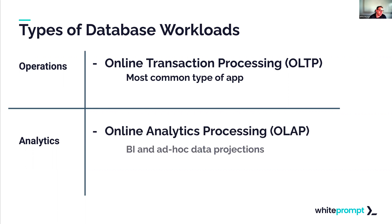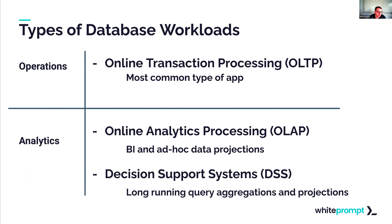For the analytics side, Online Analytics Processing (OLAP) serves BI purposes and ad hoc data projections — typically we don't know what the user will be asking. There also exist Decision Support Systems (DSS), which are data lakes and data warehouses. They handle long-running queries against semi-structured data. The main difference between OLAP and DSS is efficiency in response time. So we have two main dimensions: nature of the access pattern and efficiency in response time.